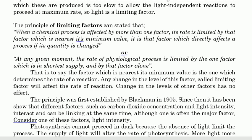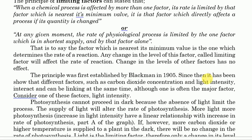For example, if light is the limiting factor, even if you increase carbon dioxide concentration, it will have no effect on photosynthesis until you change the light level. The principle of limiting factor was first established by Blackman in 1905. Since then, it has been shown that different factors such as carbon dioxide concentration and light intensity interact and can be limiting at the same time, although one is often the major factor.